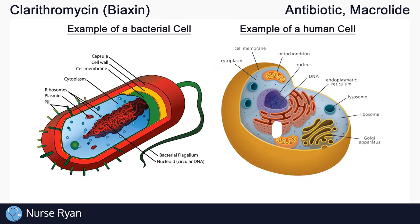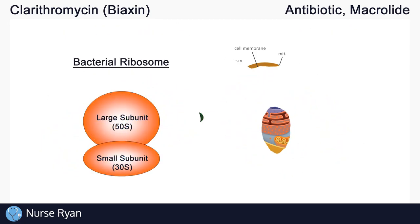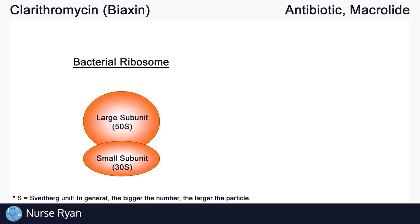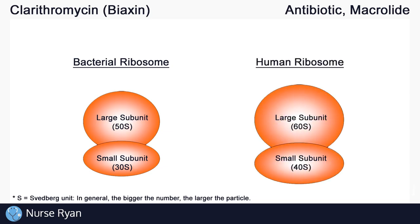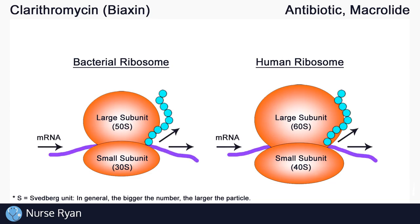Bacterial cells and human cells both need these proteins to function. So how can we inhibit just the production in bacterial cells? Well, it just so happens that ribosomes are slightly different in bacterial cells. In bacterial cells, the large subunit of the ribosomes is 50S and the small subunit is 30S. S stands for the Svedberg unit — the bigger the number, the larger the particle. But in human cells, ribosomes are made up of a 60S and a 40S subunit. So essentially, they function the same way to make proteins, they're just different sizes.